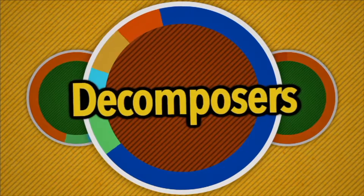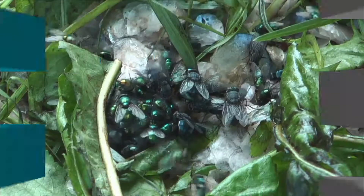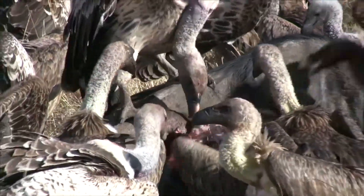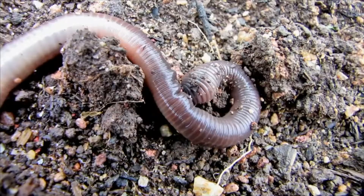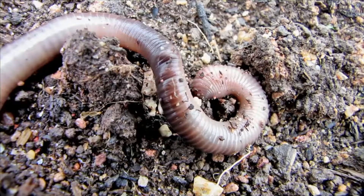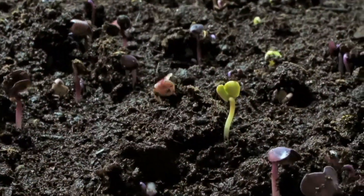Now let's talk about decomposers. A decomposer recycles dead plants and animals. When plants and animals die, they become food for decomposers. An example of an animal decomposer is an earthworm. Earthworms eat dead plants and animals. The waste that earthworms leave behind is rich in nutrients, and nutrients help plants to grow.